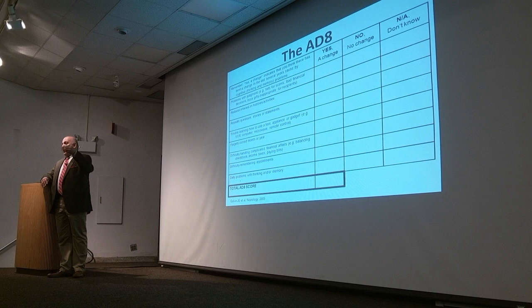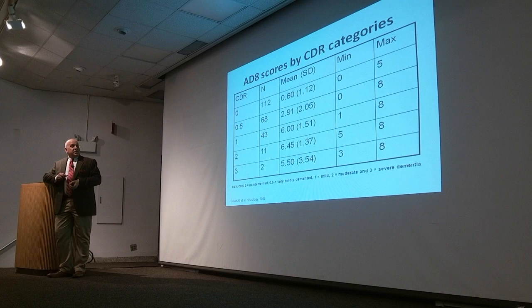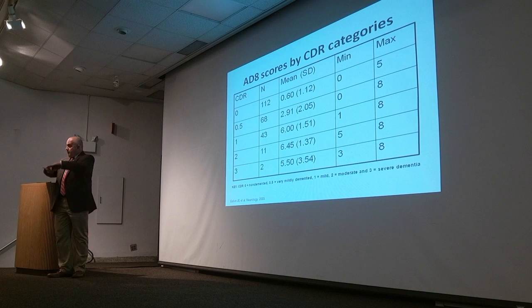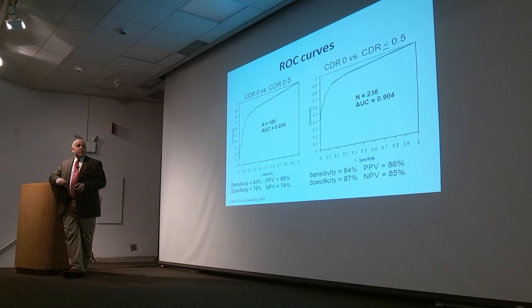We're looking for someone who didn't used to repeat themselves. Looking at the properties of this: on the CDR scale, zero is not demented, 0.5 is very mildly impaired, 1, 2, and 3 are mild, moderate, and severely impaired. People who are CDR 0 are rated by their informant at less than one, but people with even the mildest impairment are rated at about three. So we have a natural cut point around two that gives us good discrimination between groups.